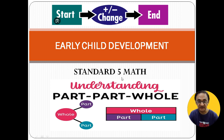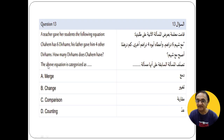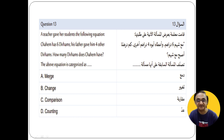There is one question that is really tricky, and I found that I must share information about it. As you can see here, a teacher gave her students the following equation: Chaham has 6 dirhams; his father gave him 4 dirhams — how many dirhams does Chaham have? Apparently, the answer looks like a merge, because we are adding the values 6 and 4, but that is not actually correct. I'll be telling you why 'merge' is not the correct answer and why option B is correct.